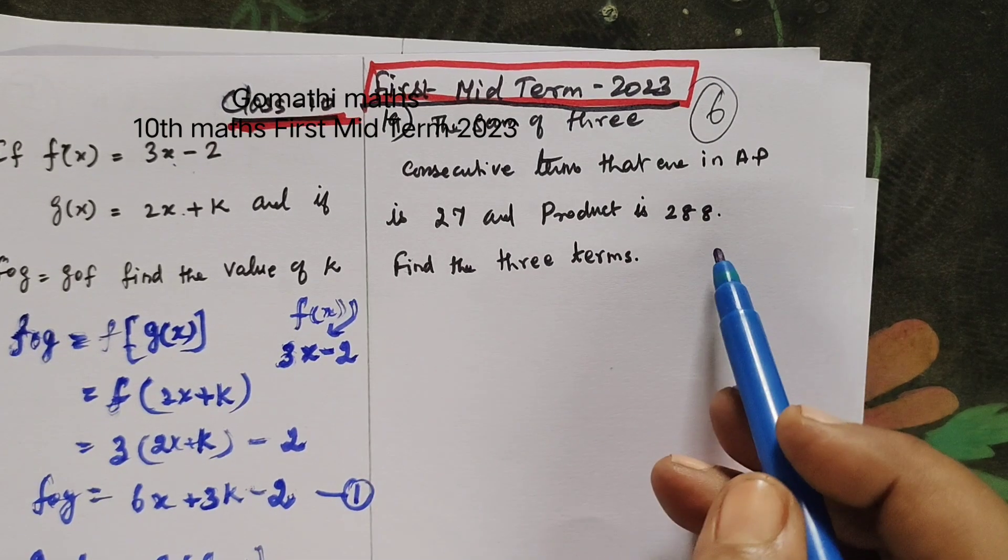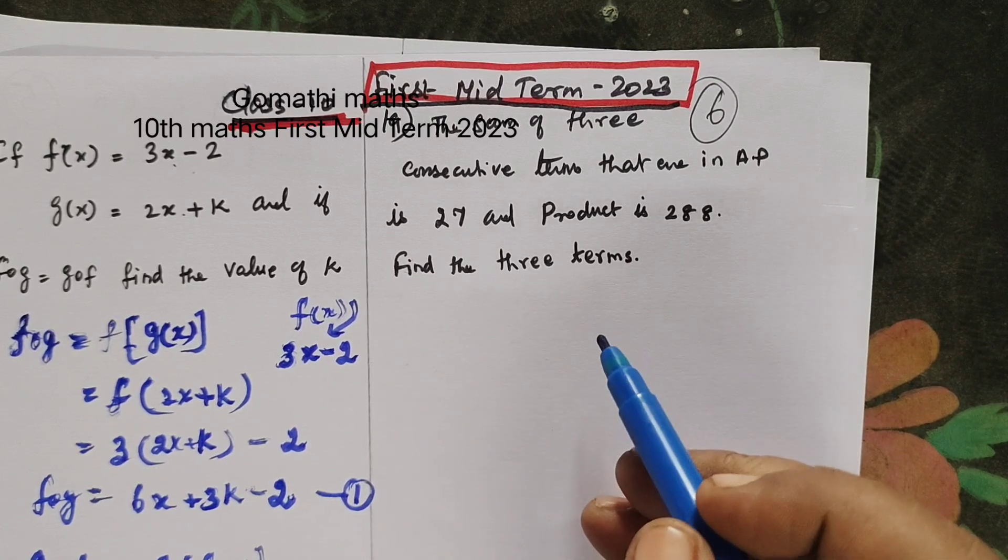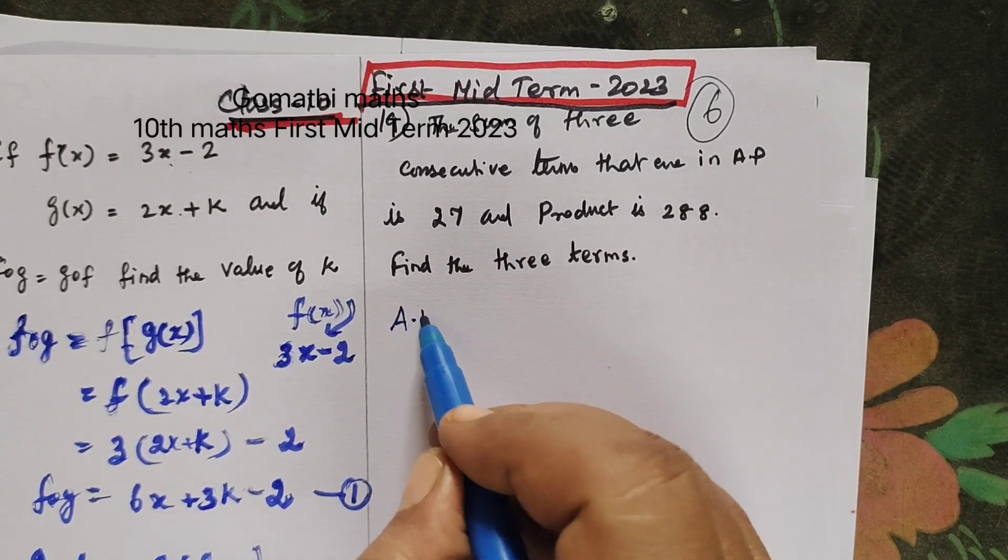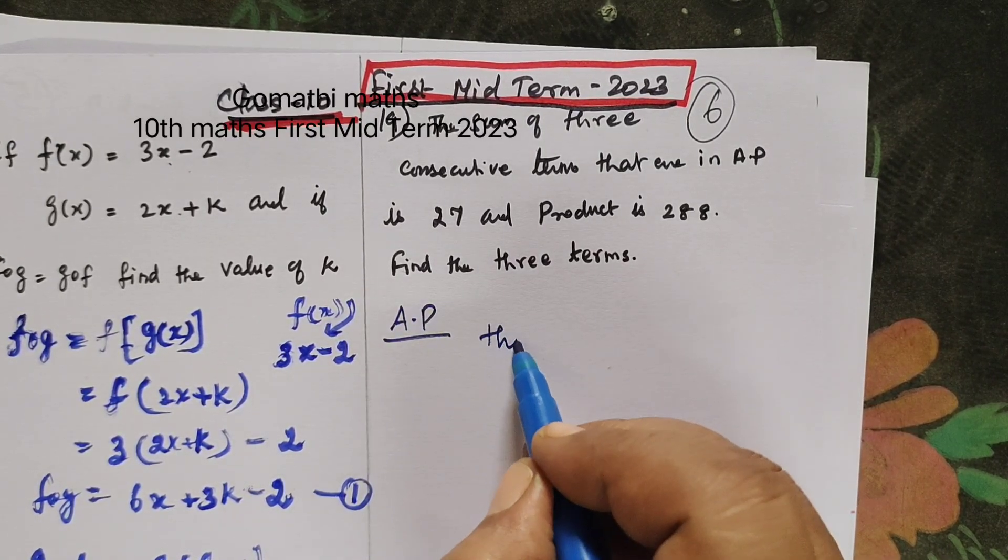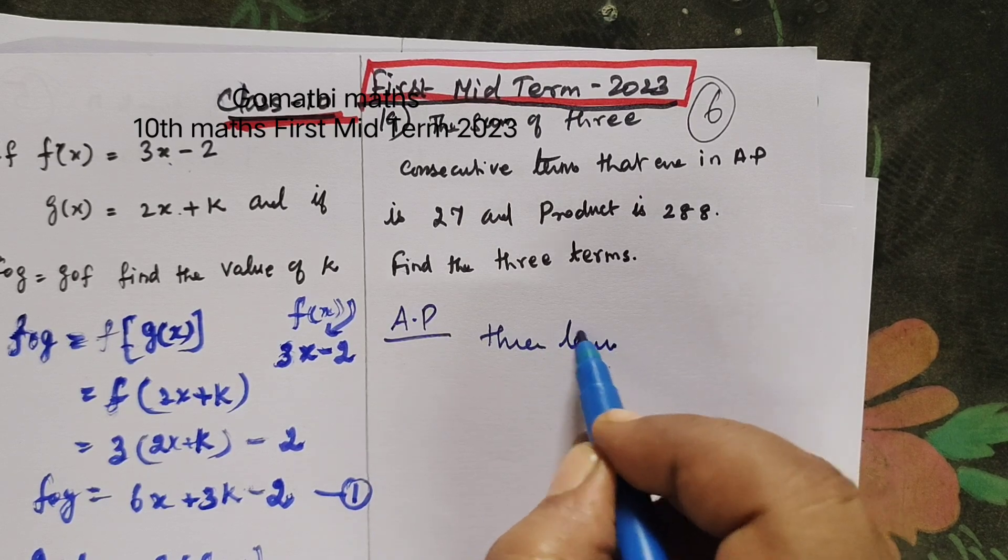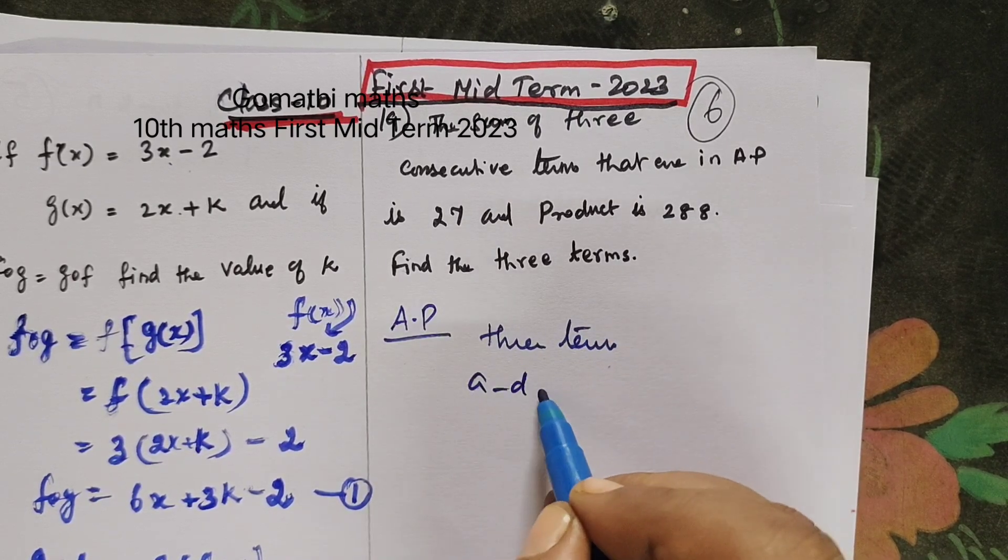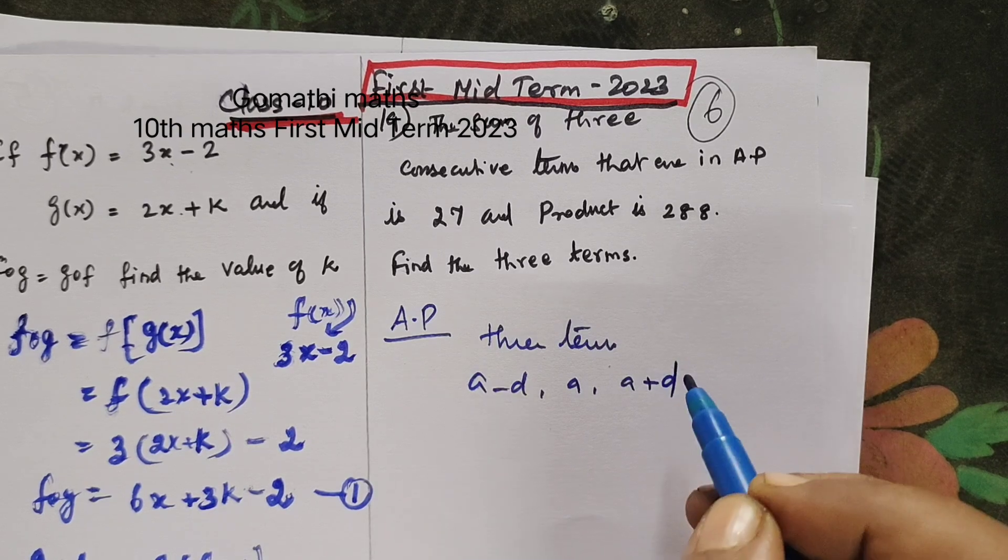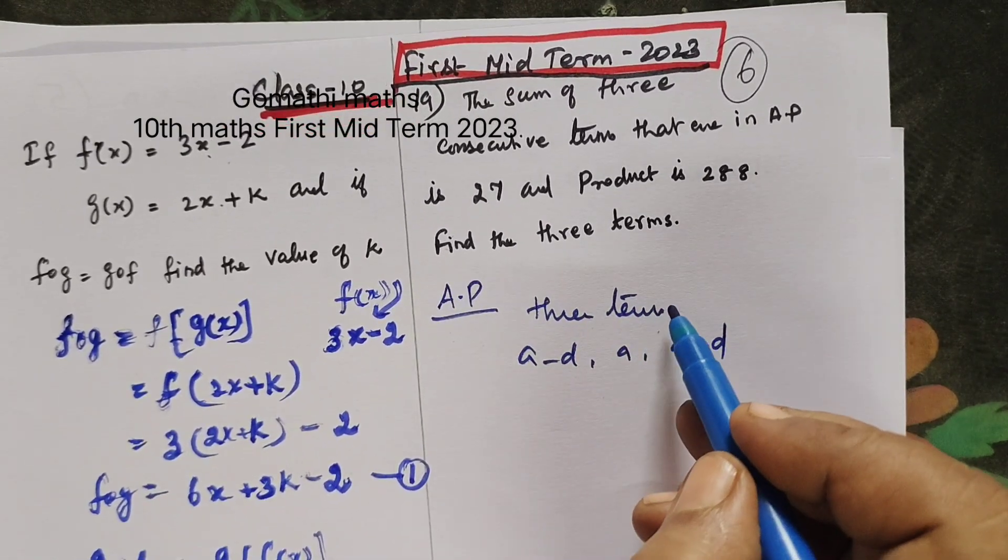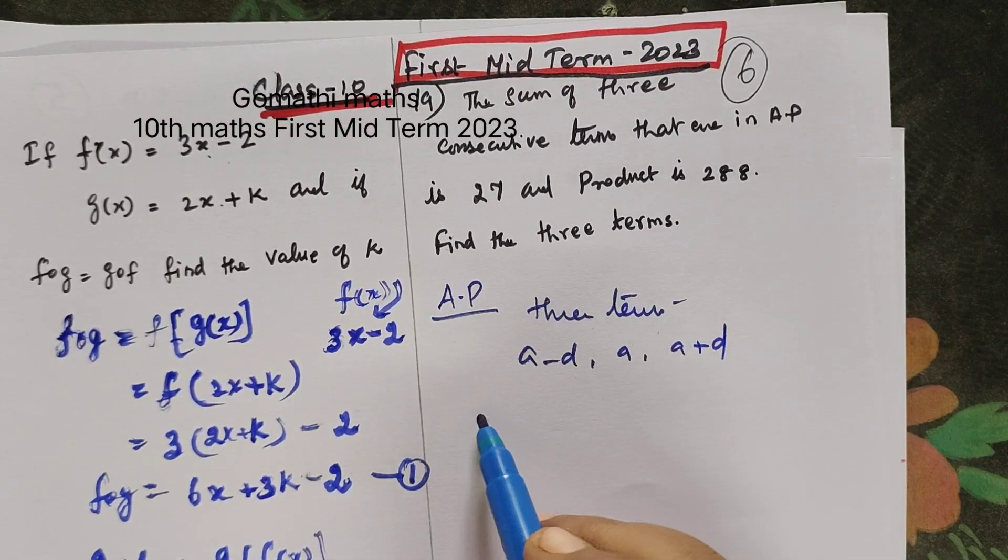And product is 288, find 3 terms. So in AP, 3 terms a minus d, a, a plus d.